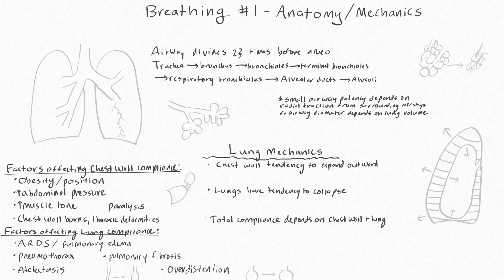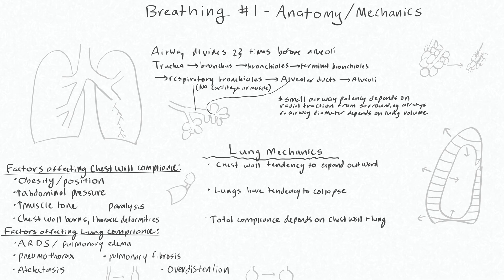The airway gets progressively smaller with each division, going from the trachea to the bronchus, then further to the bronchioles, terminal bronchioles, and then what are called respiratory bronchioles. These are getting pretty small, so at this point we have no cartilaginous or muscle support — these are your small airways and they're very prone to collapse, as are your alveolar ducts and then your actual alveolar sacs.